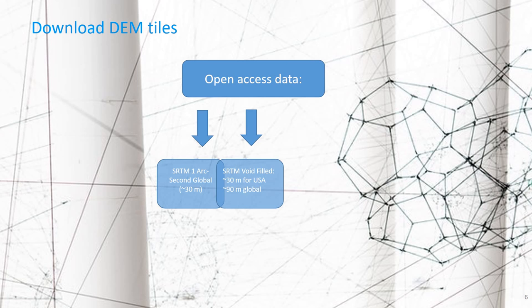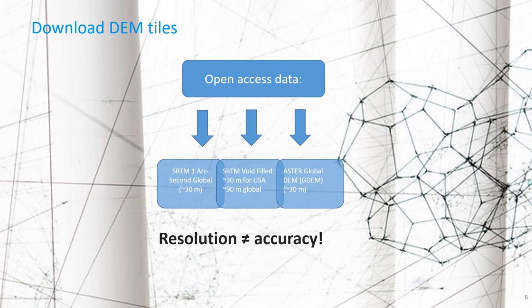The SRTM void filled product is around 30 meters for the USA and 90 meters globally. And there's the experimental Aster global DEM or GDEM product, which is also around 30 meters spatial resolution. You have to keep in mind that resolution is not the same as accuracy — these terms should not be confused.